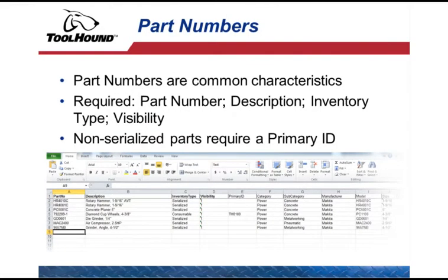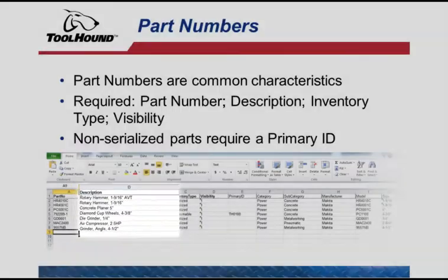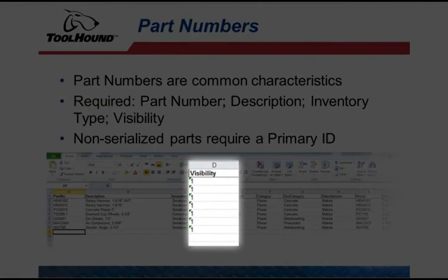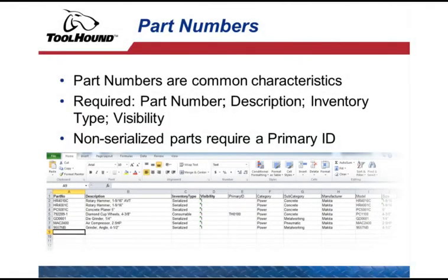As covered in the Core Principles video, part numbers identify a group of items with common characteristics — frequently the model number or vendor part number is used. Part numbers contain all the general information for the part. The required columns are: Part Number, Description, Inventory Type (which must contain serialized, consumable, bulk, or non-stock, spelled out in full), and Visibility, which is the ID of the highest point in the location hierarchy. For non-serialized inventory, include the Primary ID — there is only one Primary ID per part number. The quantity for non-serialized inventory will need to be added with an inventory adjustment after importing. Other frequently used columns for flexible reporting are Category and Subcategory, Manufacturer, and Vendor. Categories and Subcategories will be imported along with the part numbers, but other references — vendors, manufacturers, and units of measure — must be entered manually into ToolHound before importing.